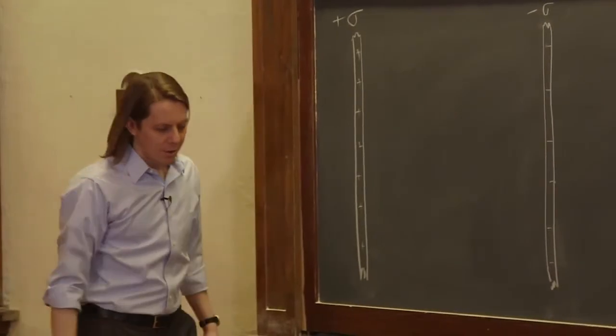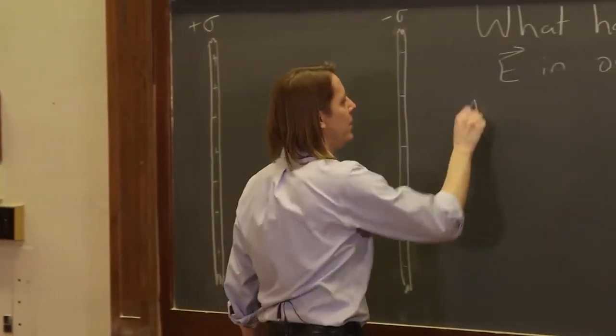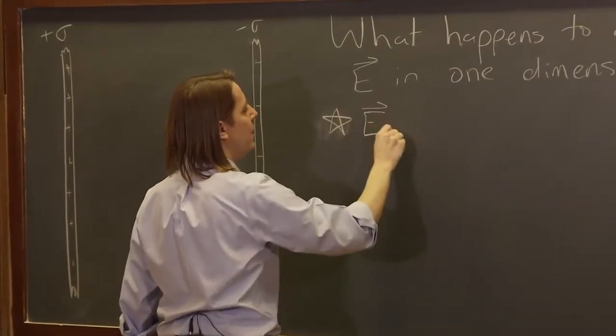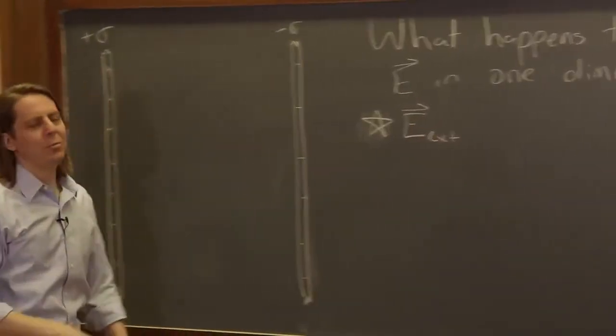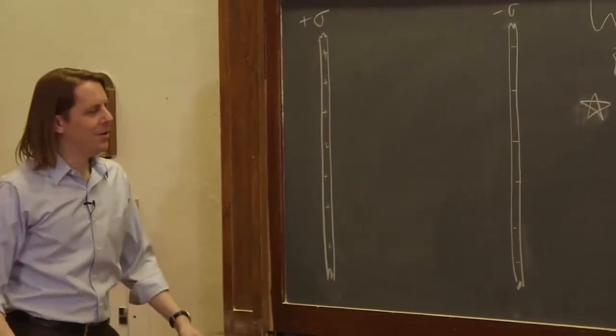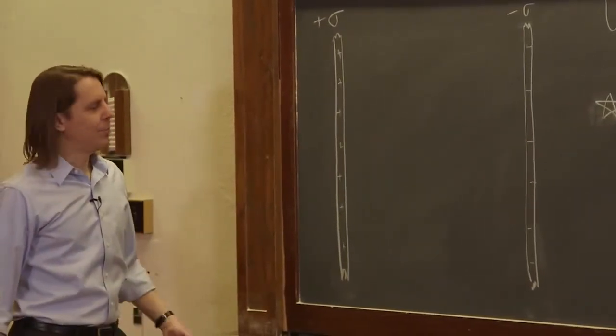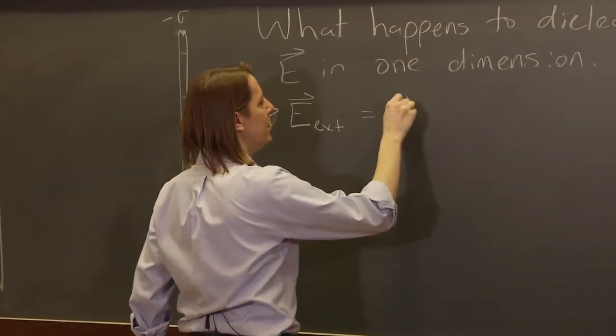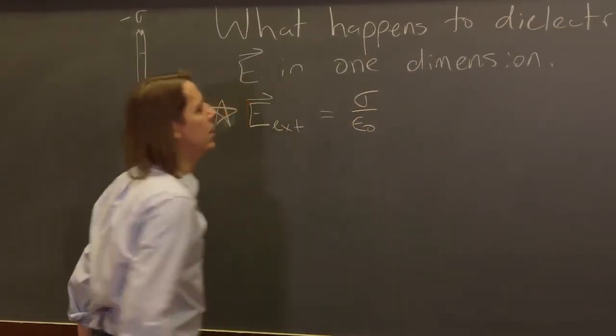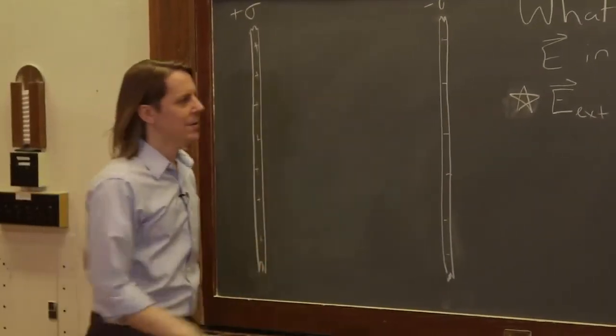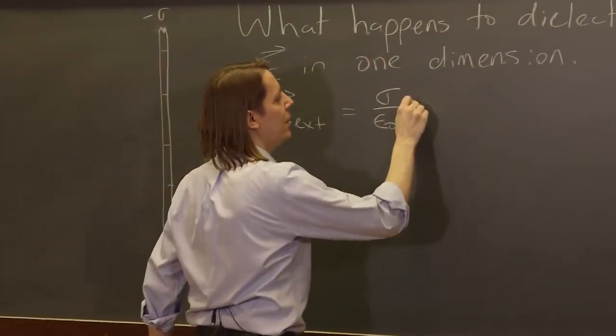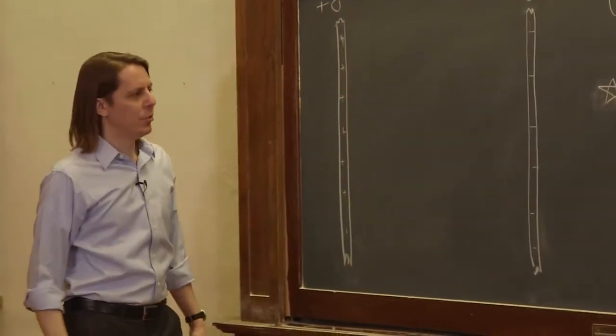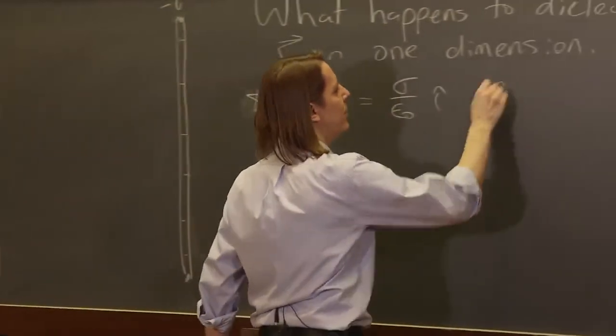Okay, so we have created our uniform field, and we'll call it, for now we need to specify which field we're talking about, E external. Every book uses its own little symbols or subscripts for everything. I'm going to call this the external field, the one created before we put anything in here, is just sigma over epsilon naught. I'll go ahead and put in i hat. It's going to be that way, from the positive to the negative direction. So this is the field before the dielectric.